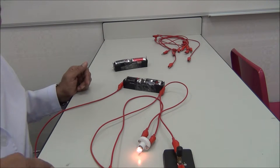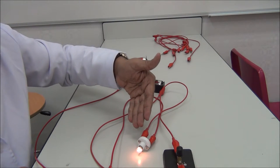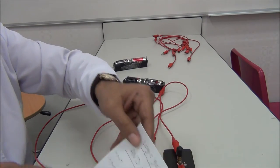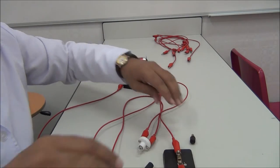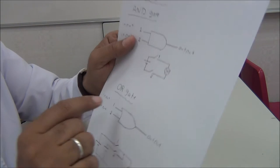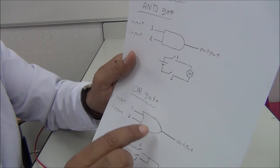...are both on, the output is on. So we performed AND gate. Now we do OR gate. Output would be on if one or two or both are on.